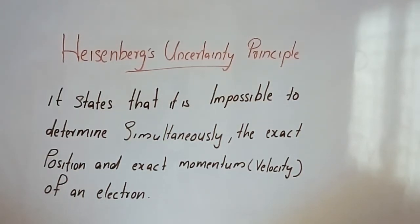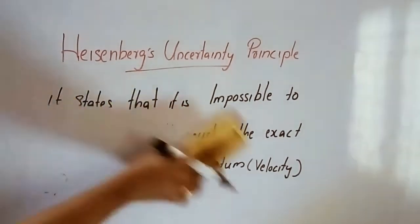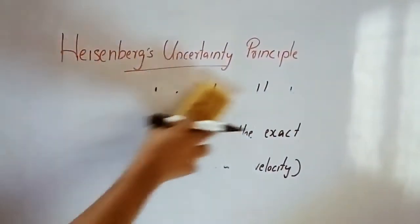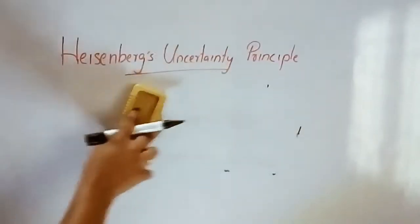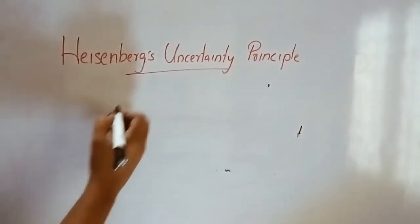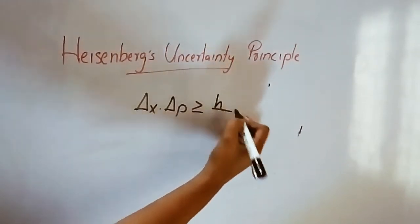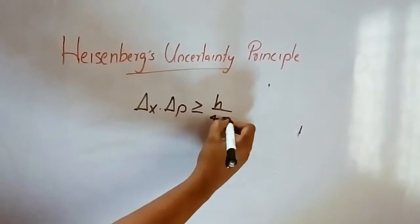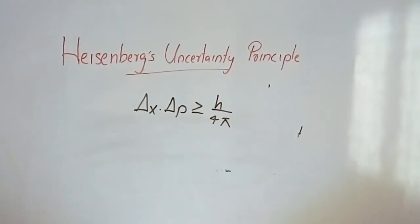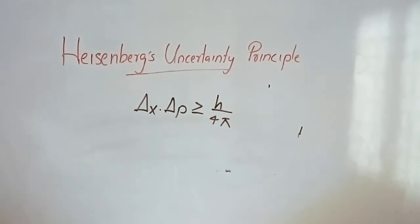We are going to determine the equation: Delta x times Delta p is greater than or equal to h by 4 pi. Here Delta x is the uncertainty in position, and Delta p is the uncertainty in momentum, which relates to velocity.